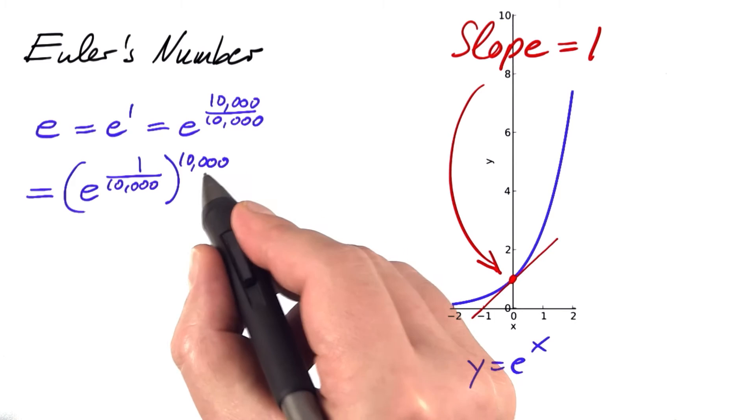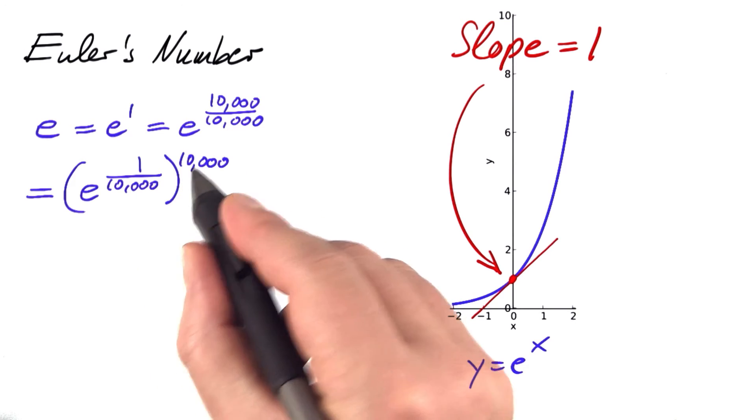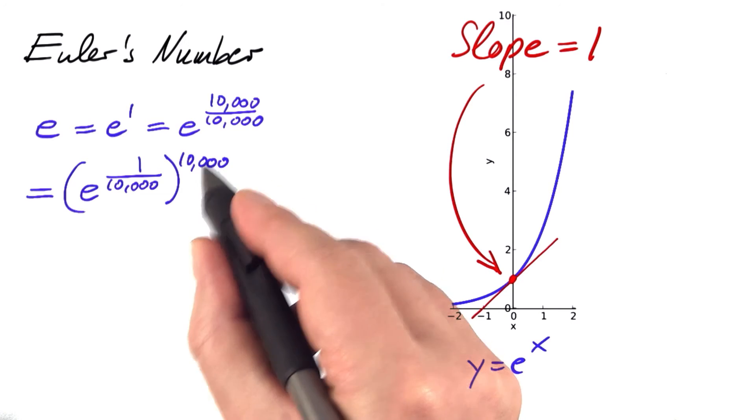Remember that rule? If you take a power of a power, you multiply the exponents. This is what you get.